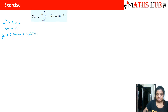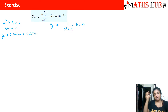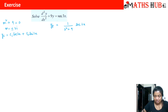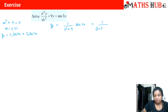Now let us work on the particular integral. yp equals 1 by (d² + 9) times sec(3x). The right-hand side function is very different and we don't have a direct rule for it, so we convert the denominator into linear factors. The roots are ±3i, so we write the denominator as (d + 3i)(d − 3i), multiplied by sec(3x).